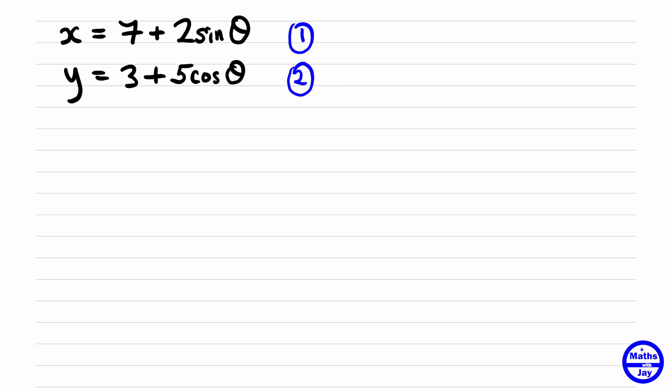So we've got equations 1 and 2, and we've got sine theta and cos theta involved, so we're looking for an identity that involves those two, and of course the one that we want is sine squared theta plus cos squared theta is 1.